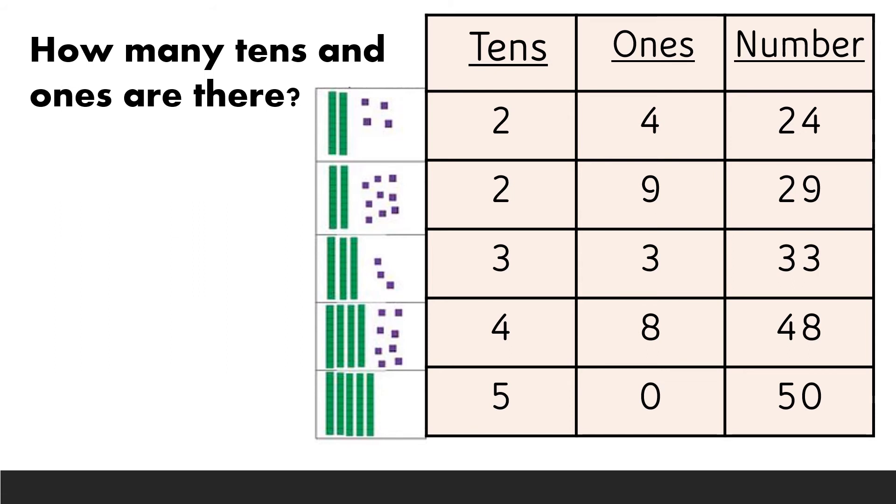How many tens and ones are there? Over here there is two blocks of green color. So, this is a group of 10. In the place of tens we have two. And in the place we have 1, 2, 3, 4. Four ones. So, the number will be 24.